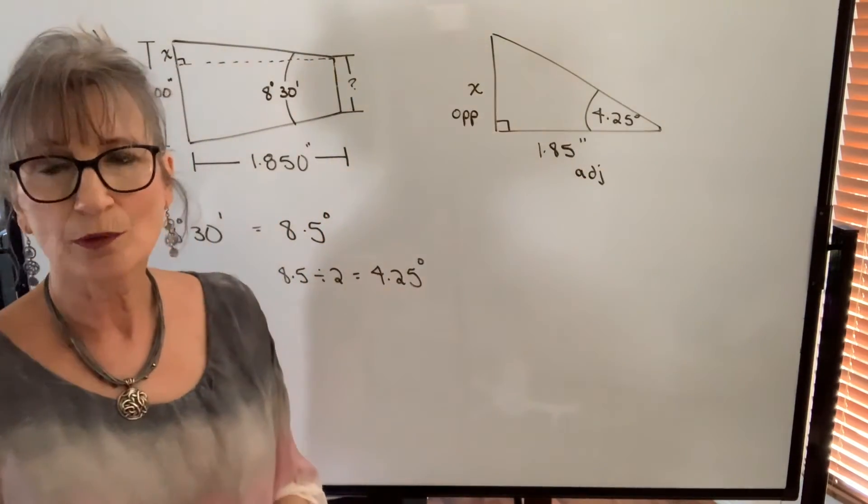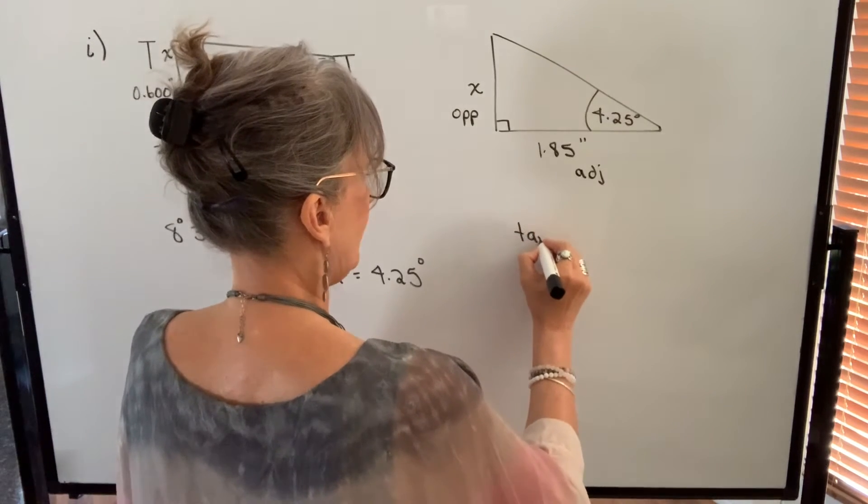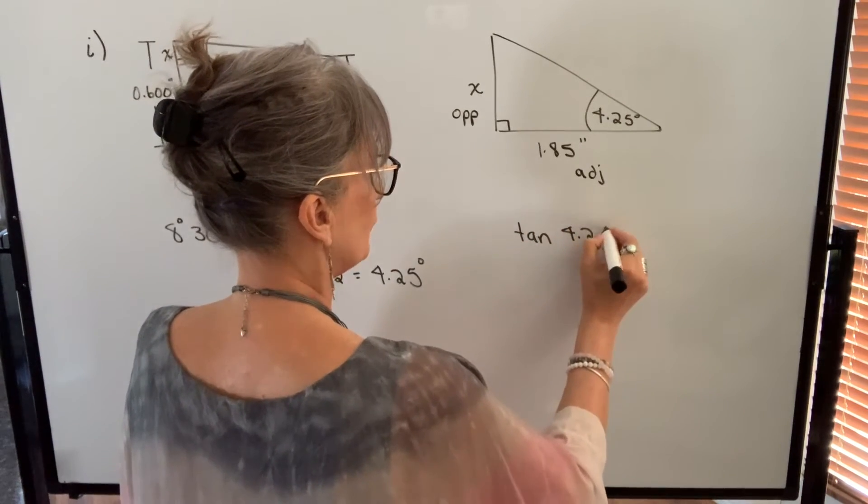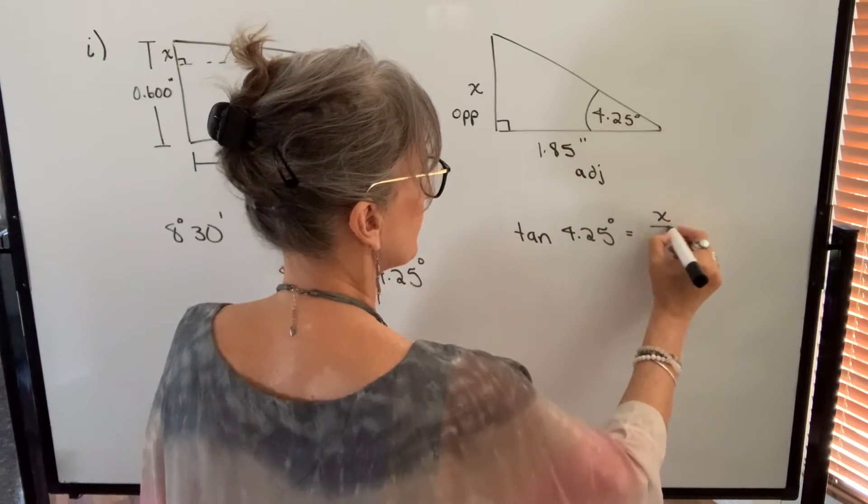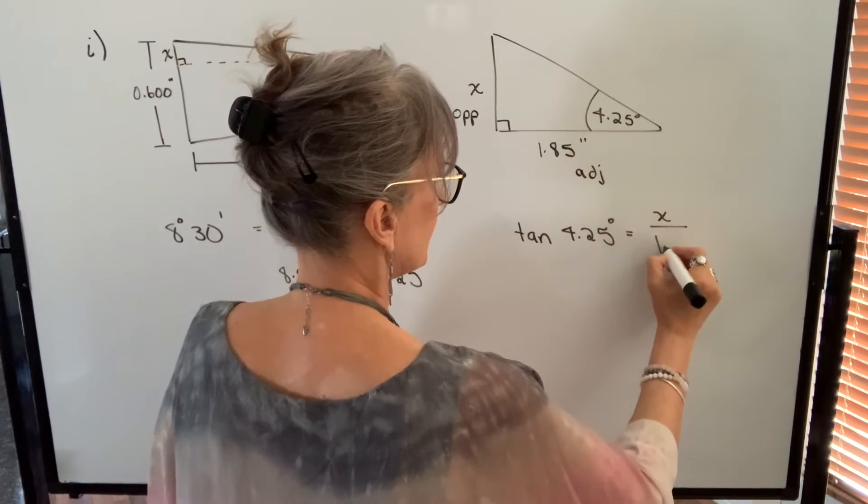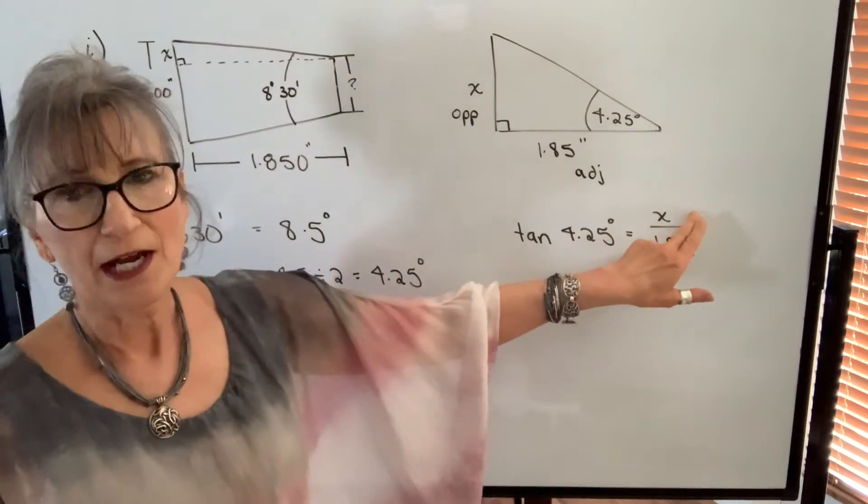So the trig function that uses opposite and adjacent is the tangent function. So the tangent of my angle 4.25 degrees will be equal to the side opposite which is x divided by the adjacent side which is 1.85. And now I'm going to solve for x.